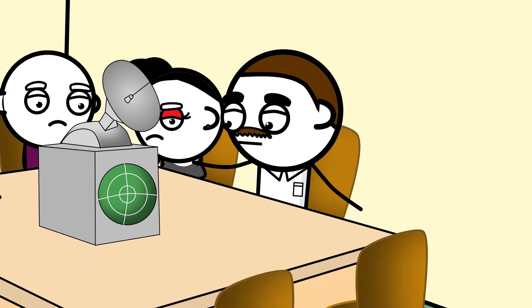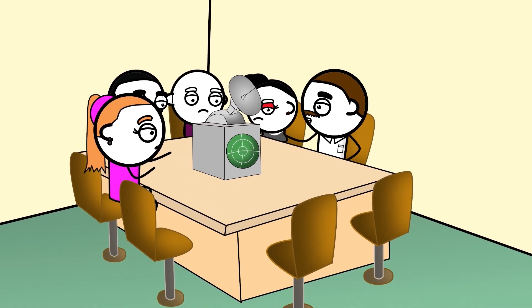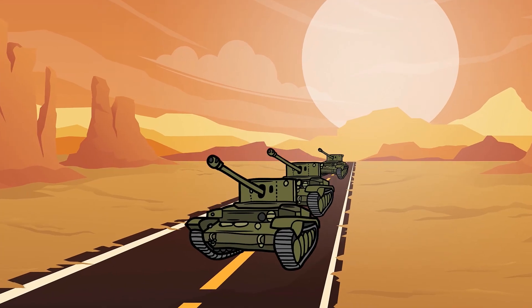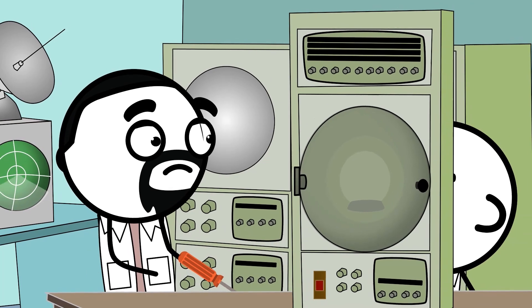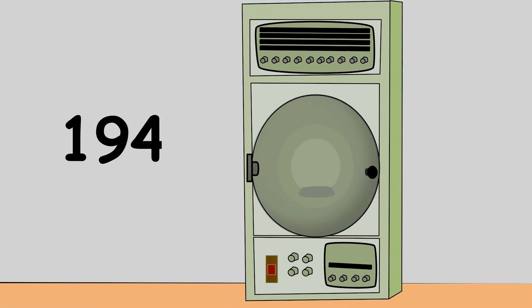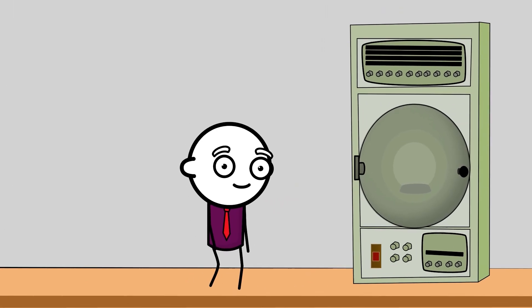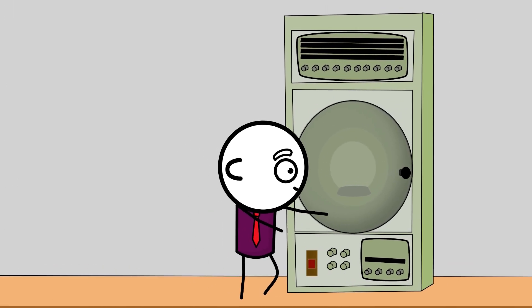Raytheon, his employer, immediately saw the potential. The war was ending, and the company needed new products for a peacetime world. They patented the idea, and in 1947, unveiled the world's first commercial microwave oven. They called it the Radar Range, and it was a monster.